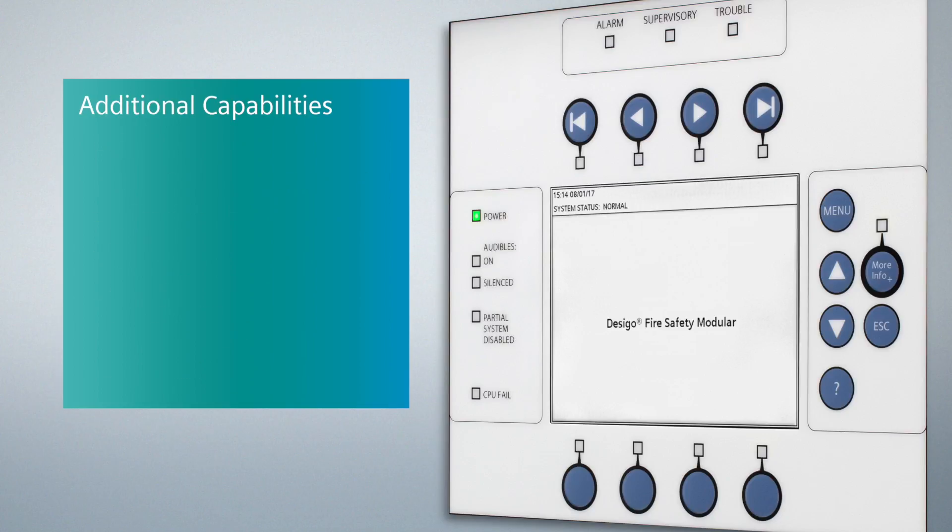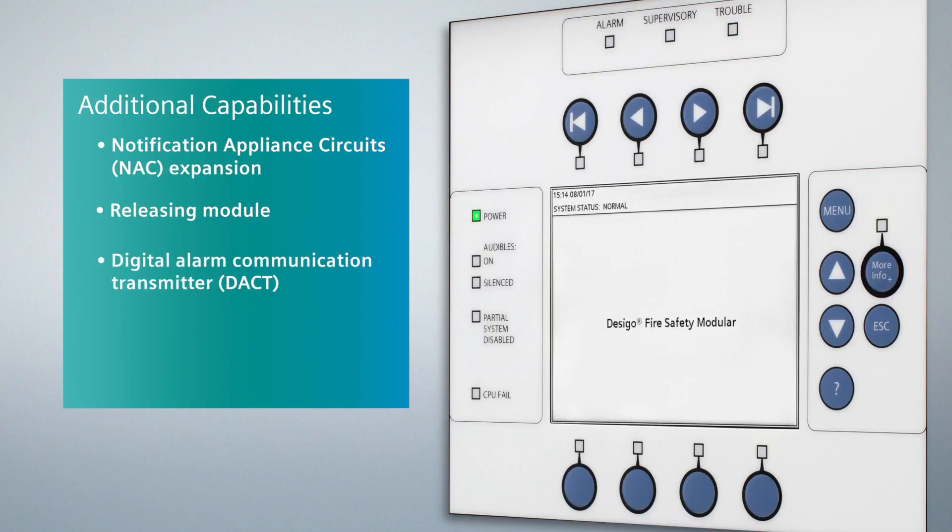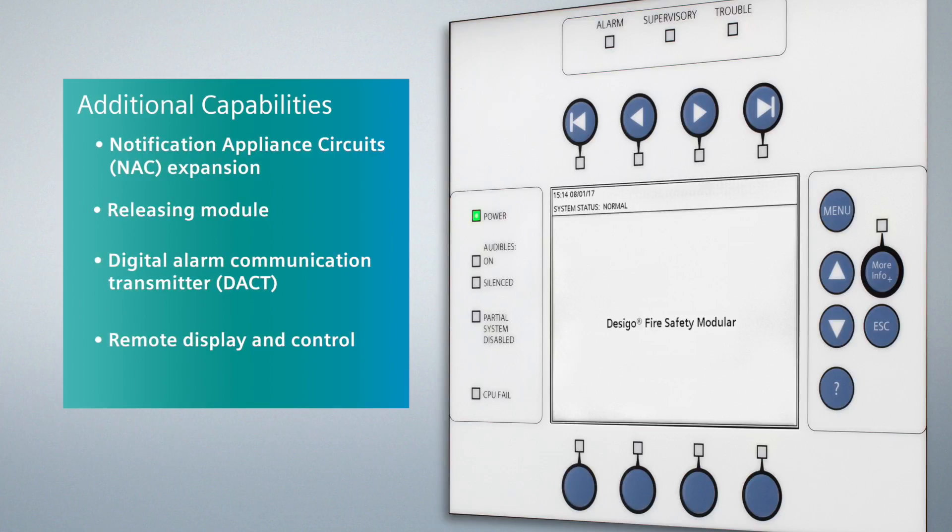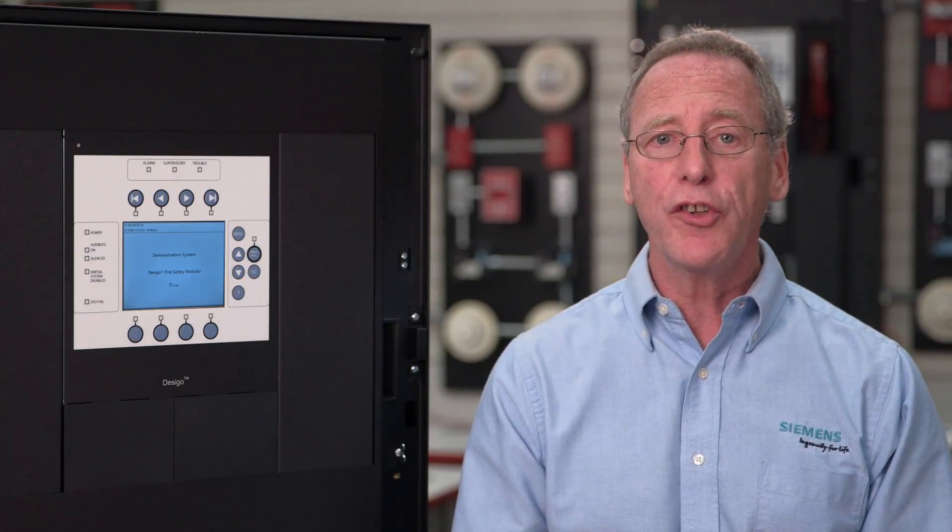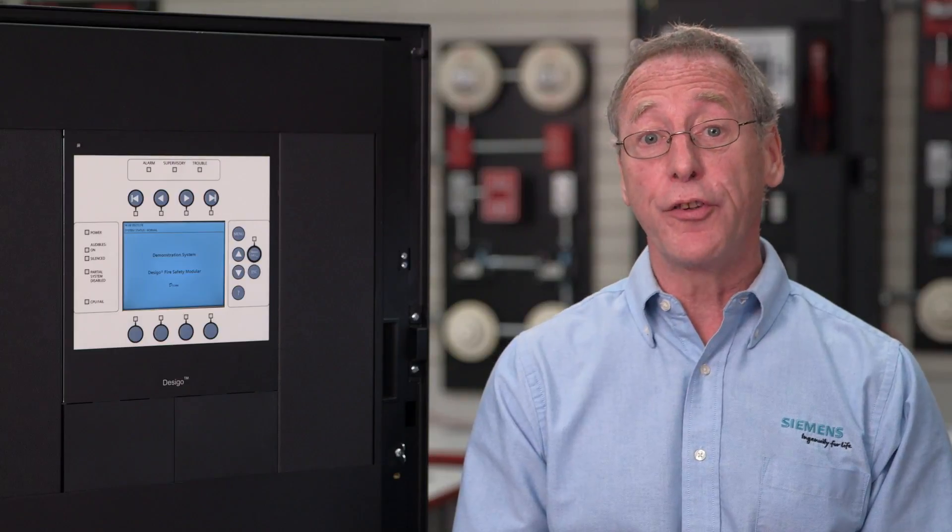Other optional modules include notification appliance circuit expansions, releasing modules, digital alarm communication transmitters, remote displays, and controls. The makeup of each modular system is unique and your system has been customized based on your specific needs. It may be a bit different than other systems you may see.